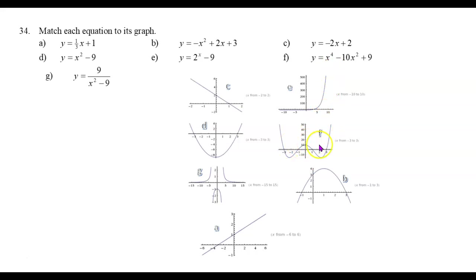Equation e is the exponential graph here. Equation f is the graph here with three turning points, that's also an even function, symmetric with respect to the y-axis. And equation g goes with this graph here that's in three separate pieces and has vertical and horizontal asymptotes.